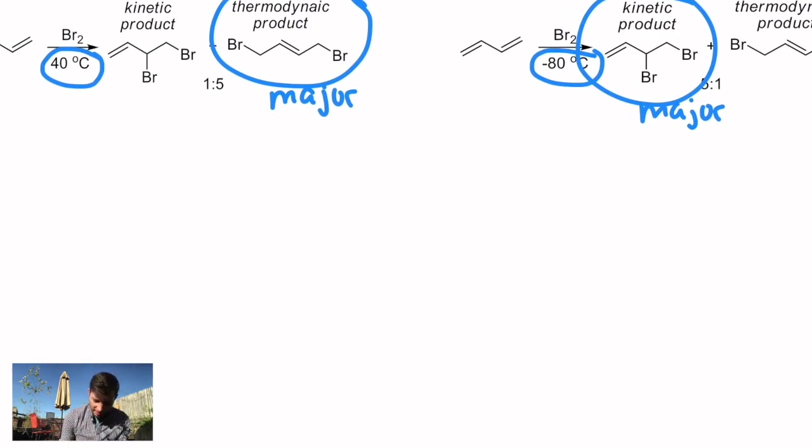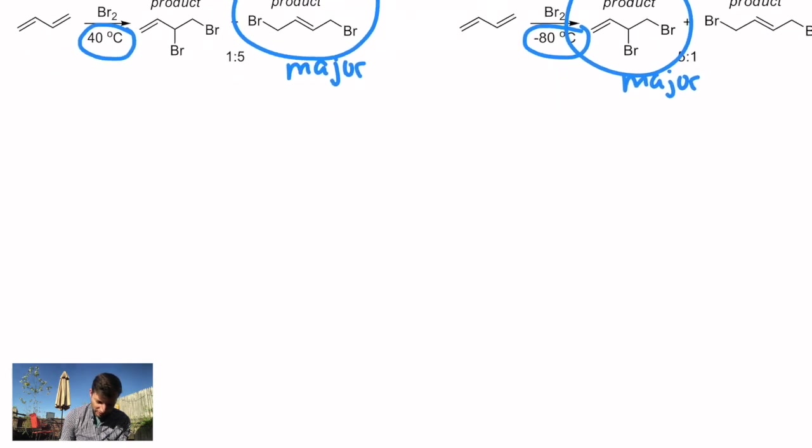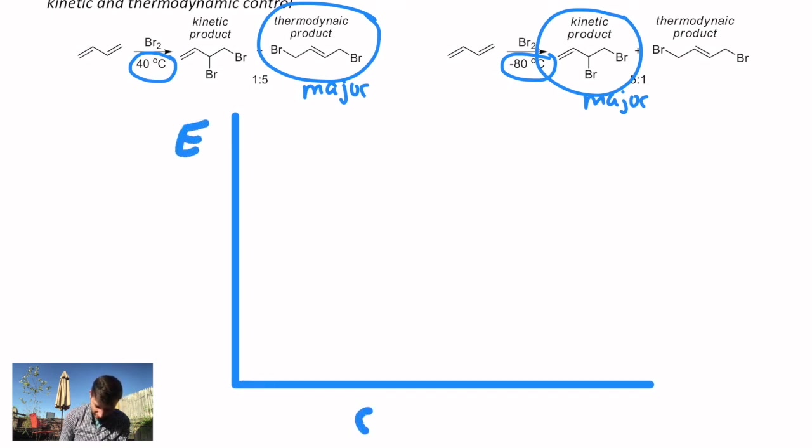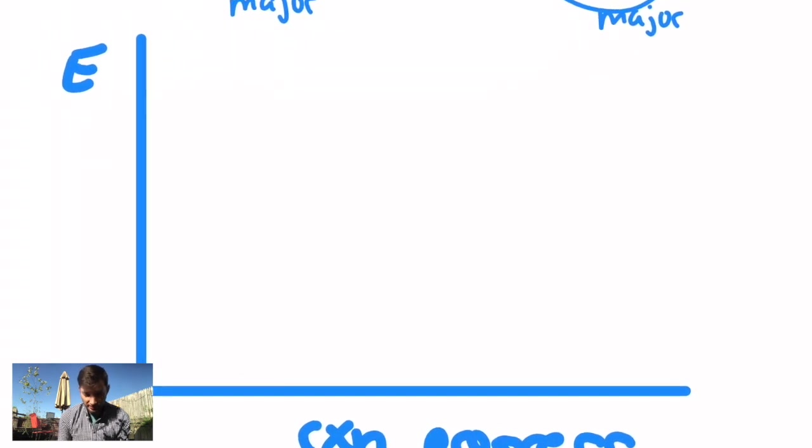Let's look at an energy diagram to explain the rationale as we go from starting material to intermediate to products in this reaction. So I'm going to draw a big energy diagram where our y-axis is energy and our x-axis is the reaction progress as we go from starting material to product. So let's first put our starting points and our end points in this. The starting point, I'm just going to draw arbitrarily some horizontal line where we have our starting diene. There's our diene.